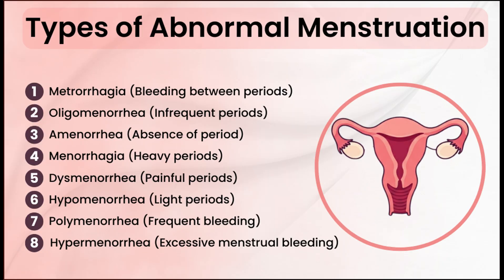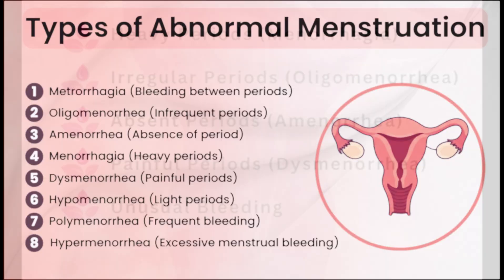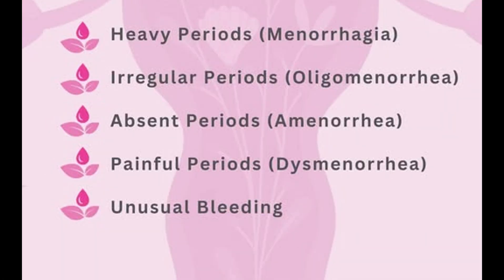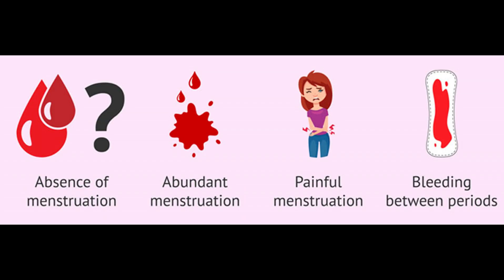Some common menstrual disorders include PMS, or premenstrual syndrome, which causes mood swings, bloating, and fatigue. Dysmenorrhea refers to painful periods caused by uterine contractions. Amenorrhea is the absence of menstruation, often due to hormonal imbalance or health issues.